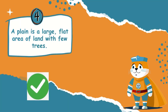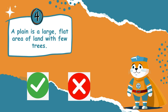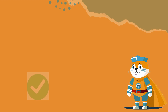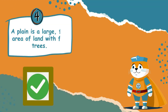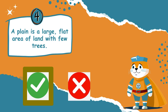A plain is a large, flat area of land with few trees. Is this statement true or false? Well done — this statement is true! Plains are wide, flat areas of land that are great for farming.